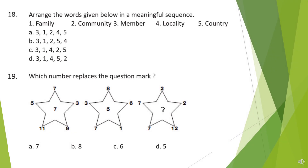Question 18. Arrange the words given below in a meaningful sequence. 1. Family. 2. Community. 3. Member. 4. Locality. 5. Country.